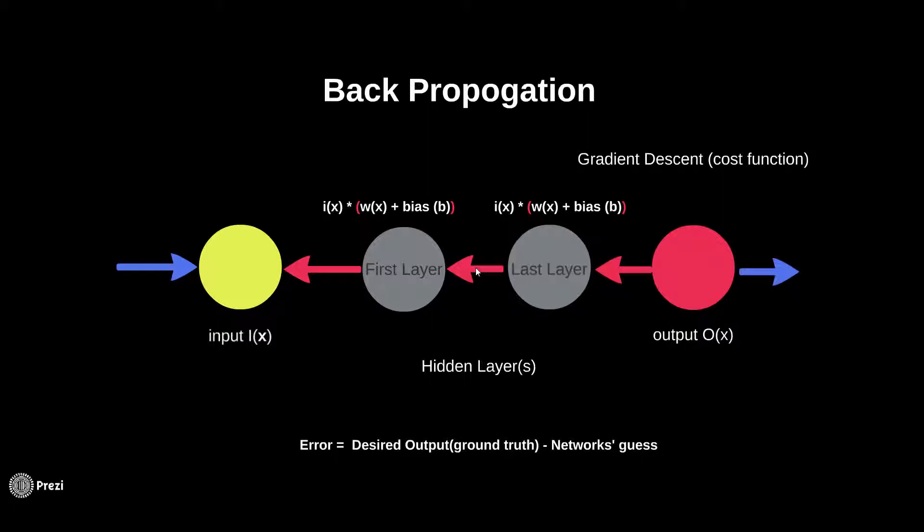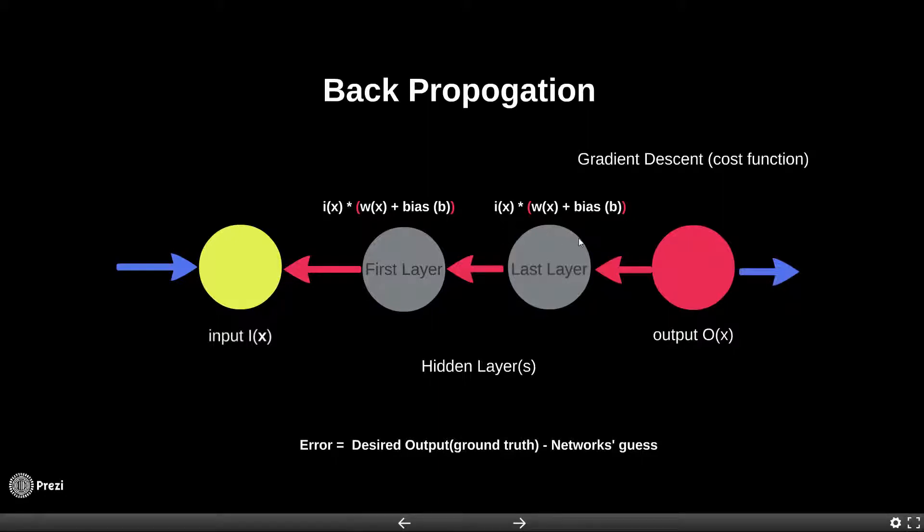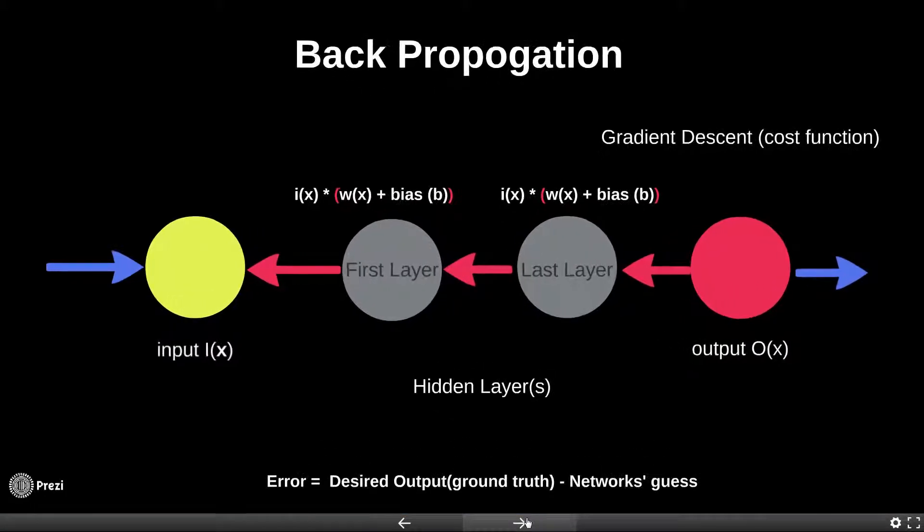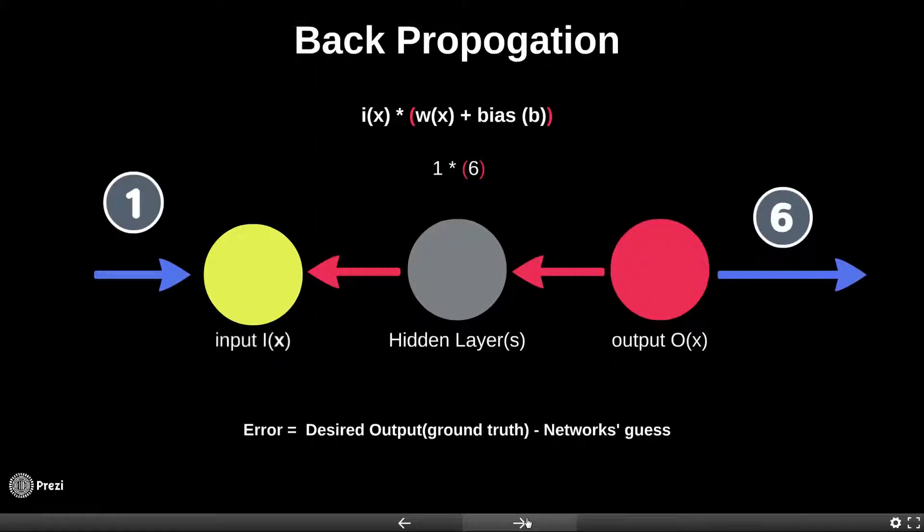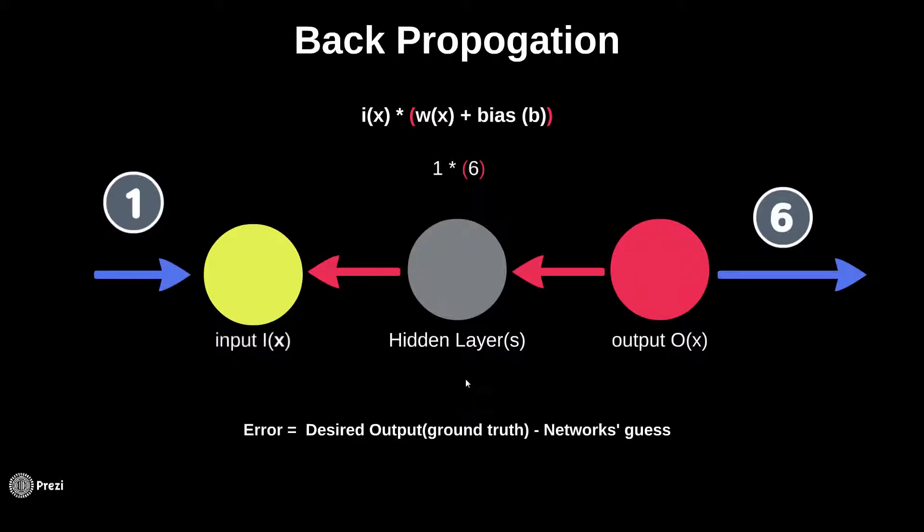The exact way how the weights and biases are calculated is based on the chain and the delta rules. This pattern of back propagation achieves the most optimum way to find the best fit of the parameters which will bring the error to a minimum. Let's go back to the simplified version where we only have one hidden layer.